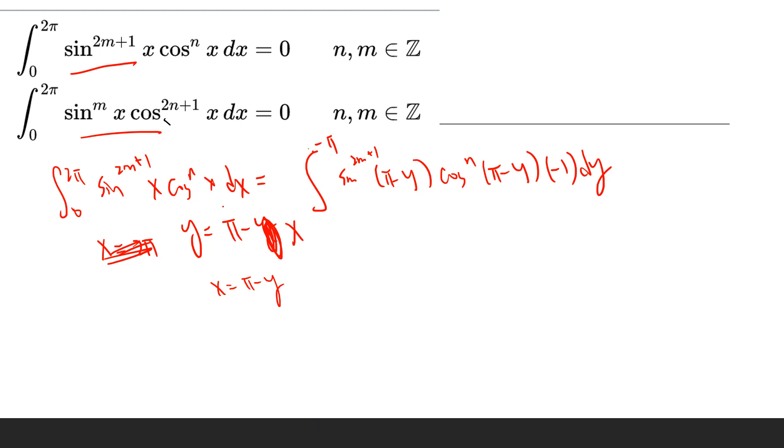Oh sorry, yeah, minus π. And when x is zero, this becomes π to minus π. I absorb this minus sign, so you get sine 2n plus 1 times π minus y, cosine to the power n of π minus y, dy.